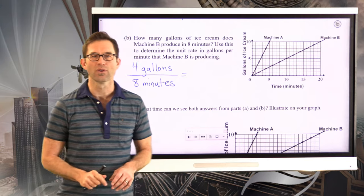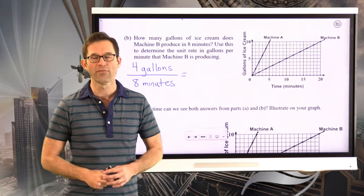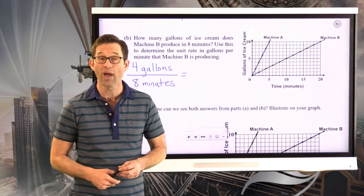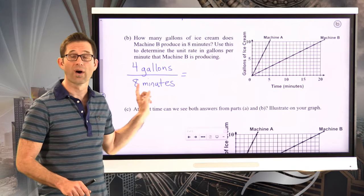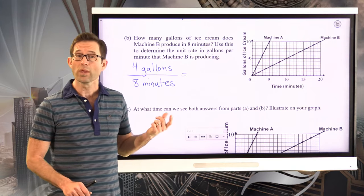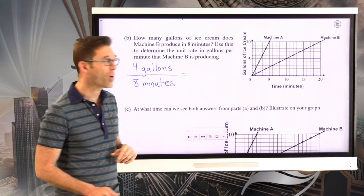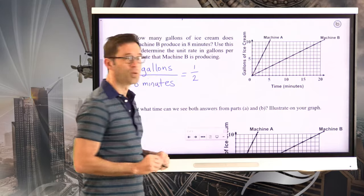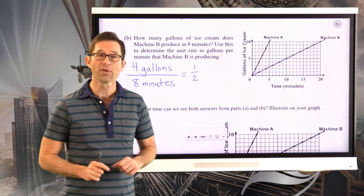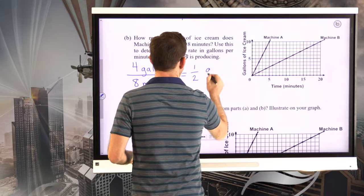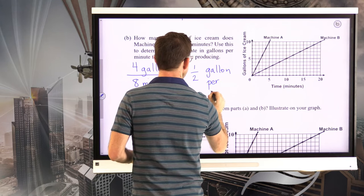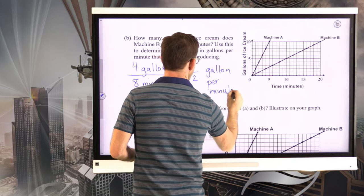Now, you've got to watch out here. You don't want to do eight divided by four and get two again because it's not producing two gallons a minute. In fact, what we really have is four divided by eight. We can really just simplify this though. Four eighths, as we all know, is simply the fraction one-half. And specifically, we're producing one-half gallon per minute.